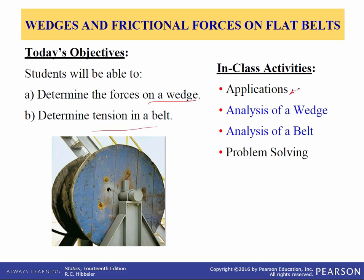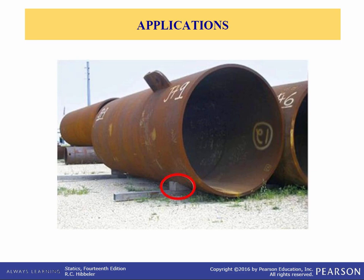First we'll look at some applications, then we'll analyze a wedge, analyze a belt, and then we'll do some problem solving. Wedges are used to adjust the elevation or provide stability for heavy objects such as this large steel pipe. This wedge is preventing the pipe from moving. How can we determine the force required to pull out the wedge? When there are no applied forces on the wedge, will it stay in place? Is it going to be what we call self-locking, or would it come out on its own?